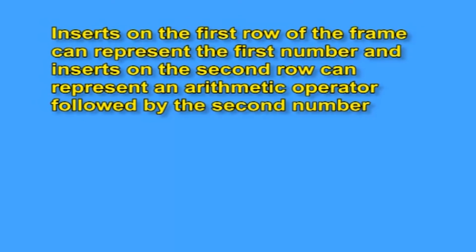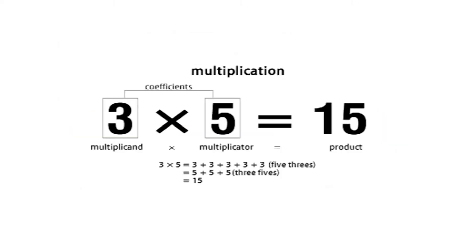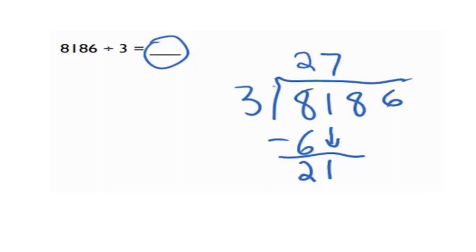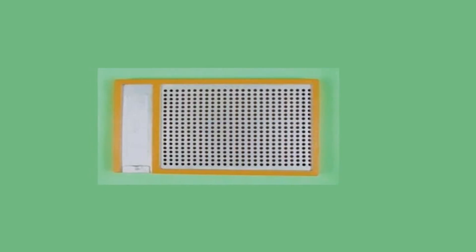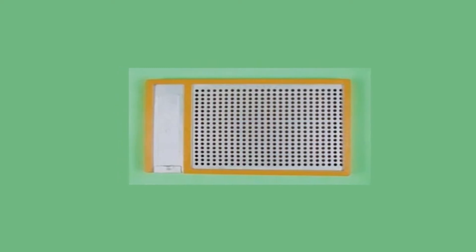A sequence of shapes on inserts can represent a mathematical expression. Inserts on the first row represent the first number; the second row represents an arithmetic operator followed by the second number. The third row carries the result, while remaining rows hold reminders, carry-overs, or other temporary values. This design supports initial learning for young children in shape and direction identification and use of simple addition, subtraction, multiplication, and division of one, two, or three-digit numbers. Once these skills are mastered, the child moves on to larger computations on the standard Taylor frame.